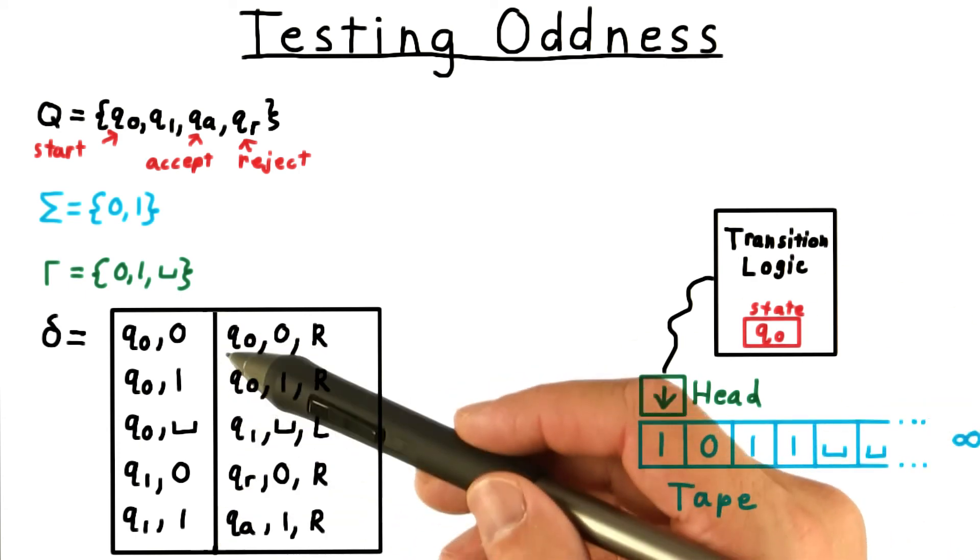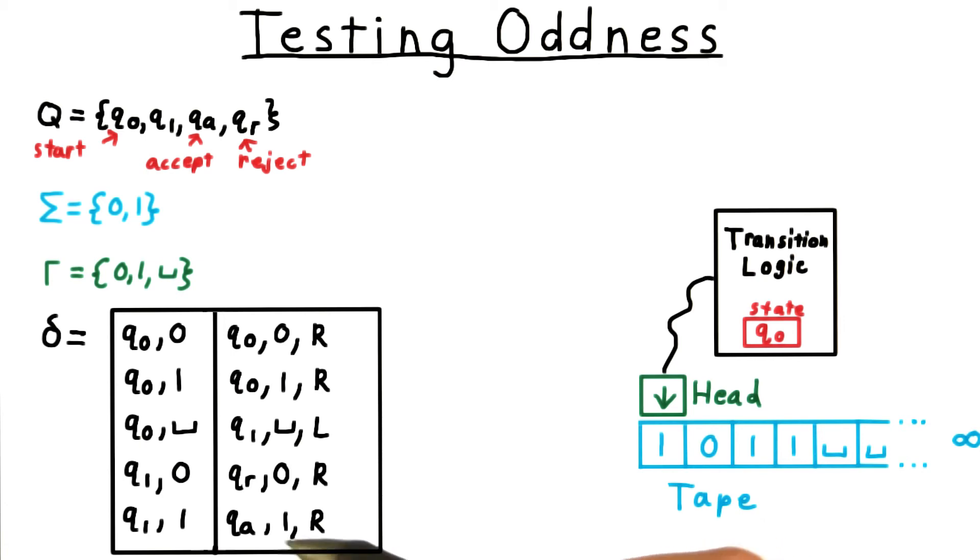Note that I've cheated here in the transition function by including only state symbol pairs in the domain that we would actually encounter during computation. By convention, if no transition is specified for the current state symbol pair, then the program just halts in the reject state.